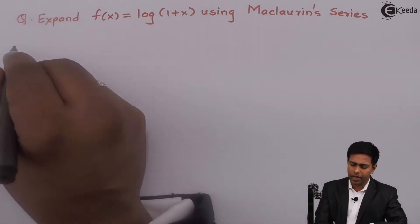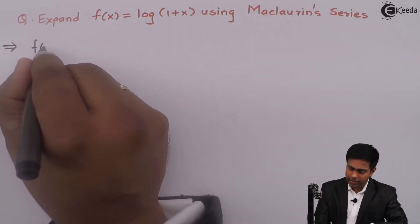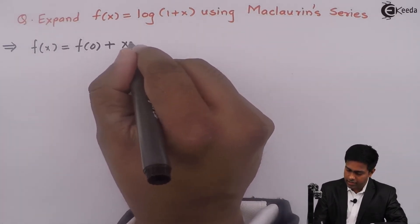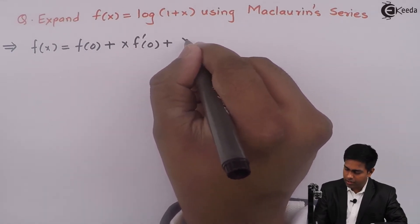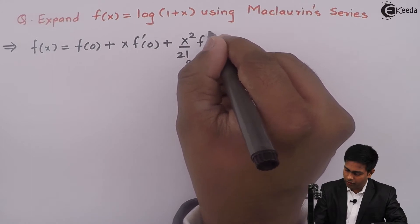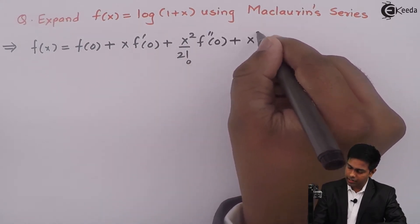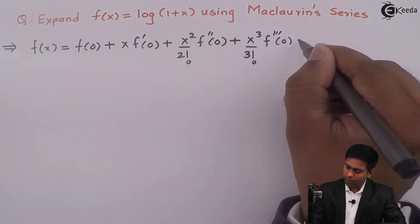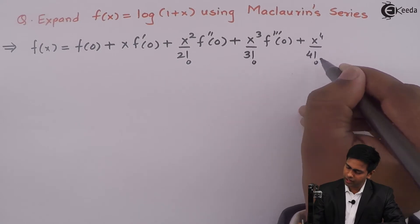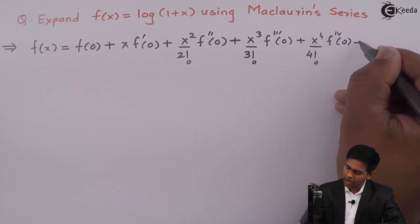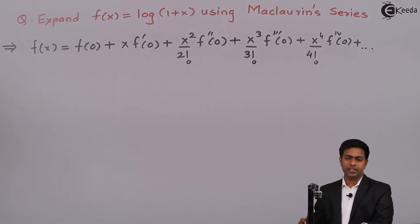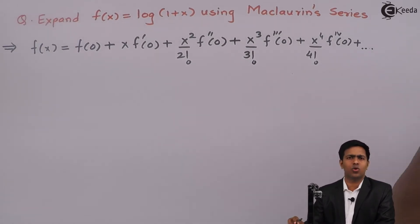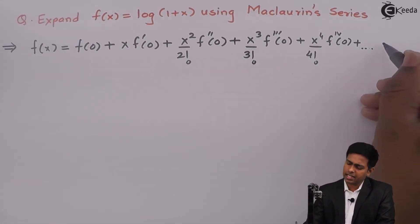The Maclaurin series is given by the formula: f(x) = f(0) + x·f'(0) + (x²/2!)·f''(0) + (x³/3!)·f'''(0) + (x⁴/4!)·f''''(0) and so on. This is an infinite series, so the next term will be (x⁵/5!)·f'''''(0) and so on. We'll call this series equation number 1.